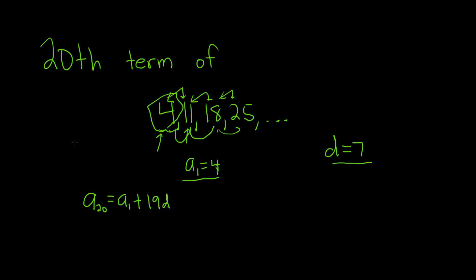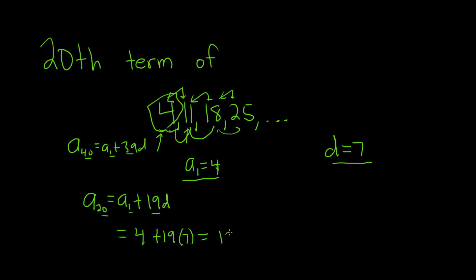Notice 20 minus 1 is 19 — this always works. So if you were looking for the 40th term, it would be the first term plus 39d, since 1 plus 39 is 40, and 1 plus 19 is 20. So a sub 1 is 4, and we have 19 times d which is 7. That's 4 plus 19 times 7. I got 137. So that would be the 20th term.